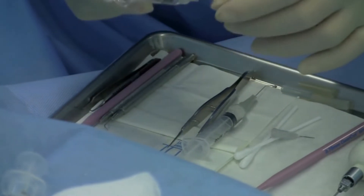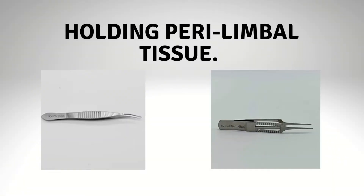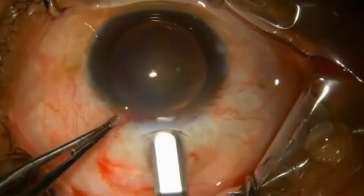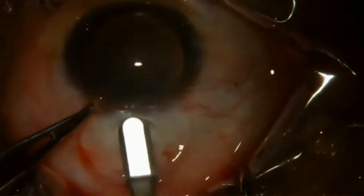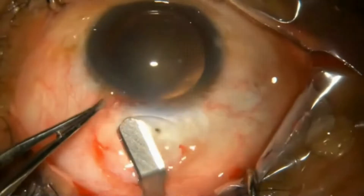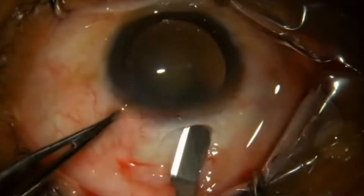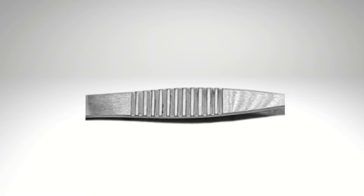Tooth forceps for holding perilembal tissue include the Limbal forceps and Pierse-Hoskins forceps. These forceps have a tube tip to hold the fibrous tissue — the tenon or the perilembal condensed tissue — which is usually held to fix the globe during the surgical procedure. The forceps have serrations on the handle for easy gripping, and they hold soft fibrous tissues like perilembal fibrous tissue, conjunctiva, or tenons.